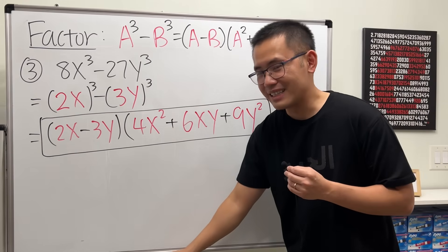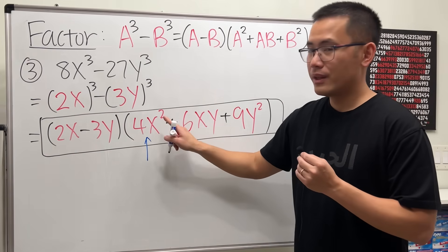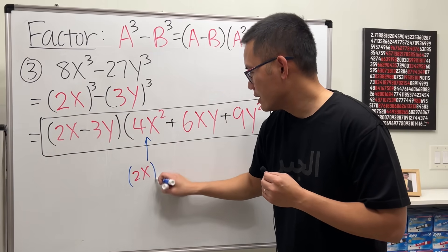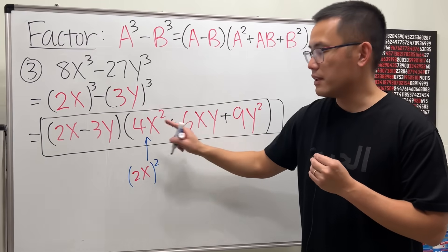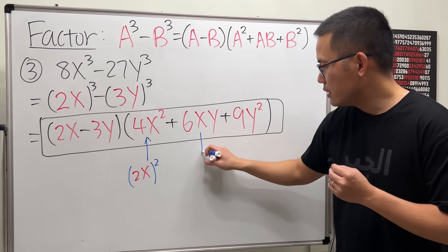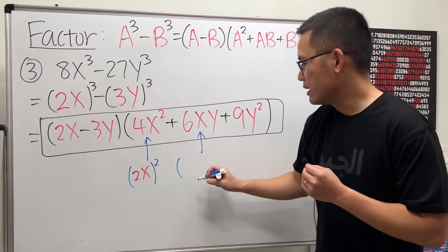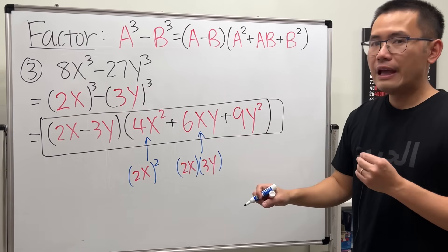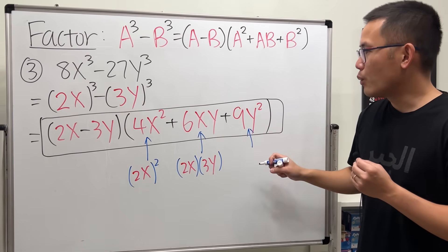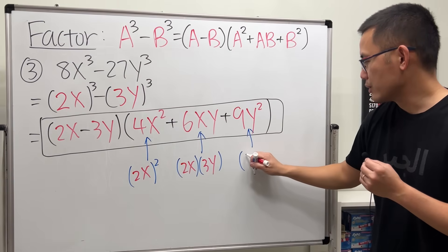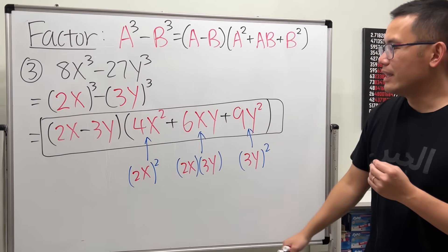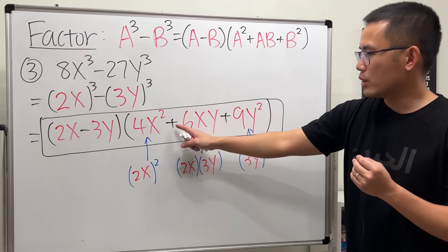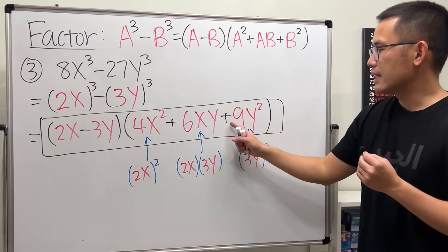Let me indicate how we got each term. We squared 2x: 2 squared gives the 4 and x squared gives x squared. We multiplied 2x times 3y to get the 6xy middle term. We squared 3y to get 9y squared. Remember the signs: if the first factor has a minus, this sign is minus, the middle is plus, and the last term is plus.